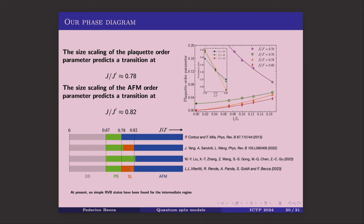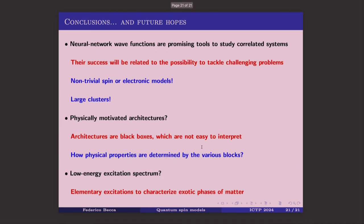Combining the magnetic and plaquette order results, we find a small but finite region — roughly between J/J'=0.78 and 0.82 — where both order parameters vanish in the thermodynamic limit, confirming the existence of a spin-liquid phase.